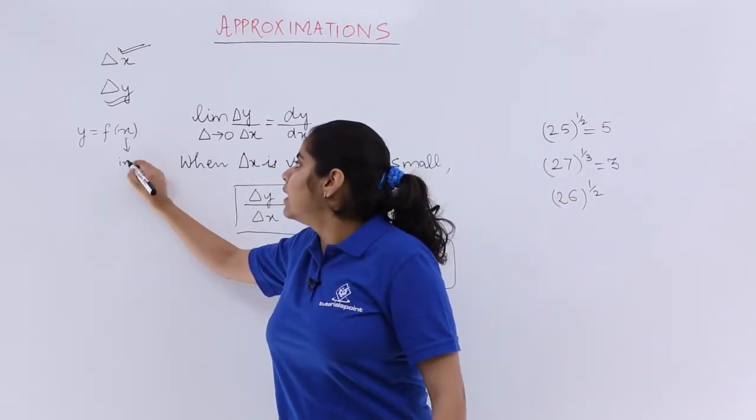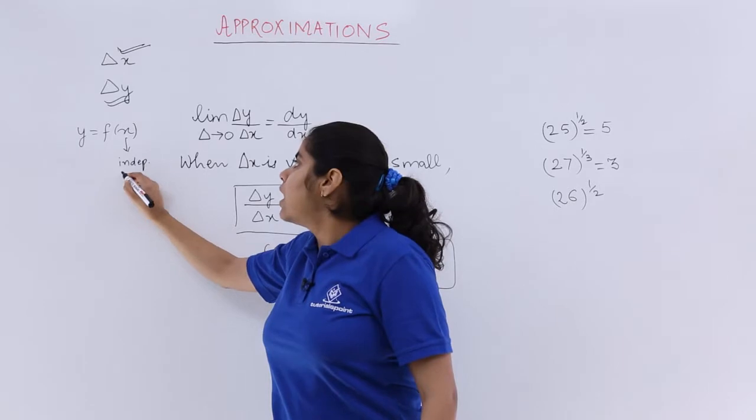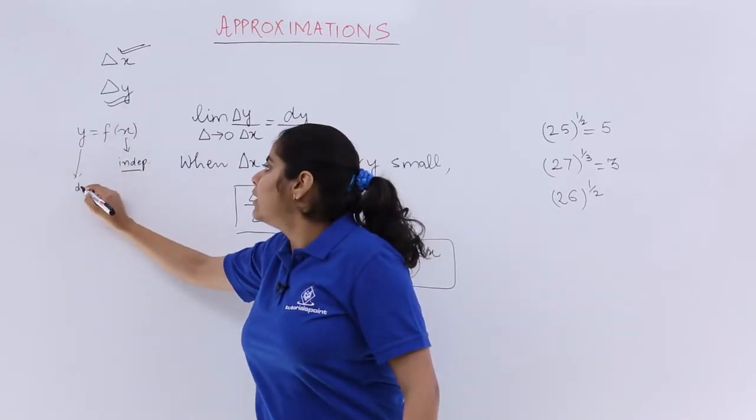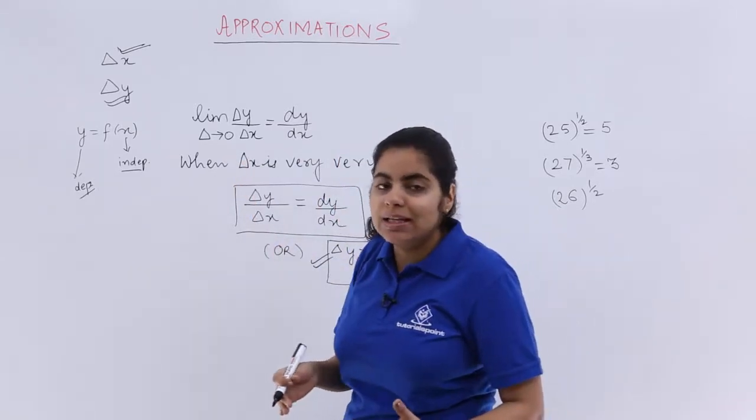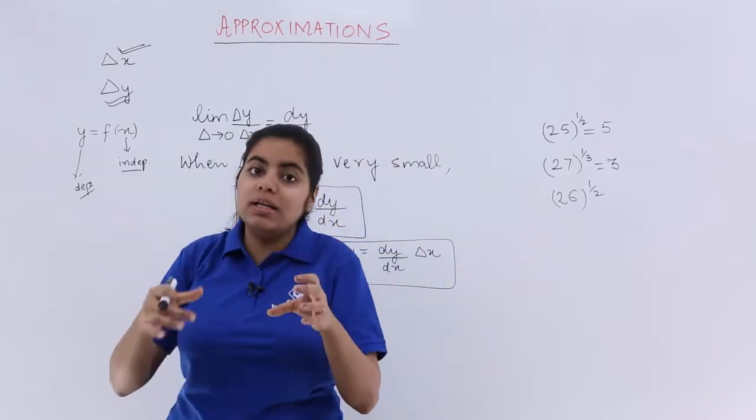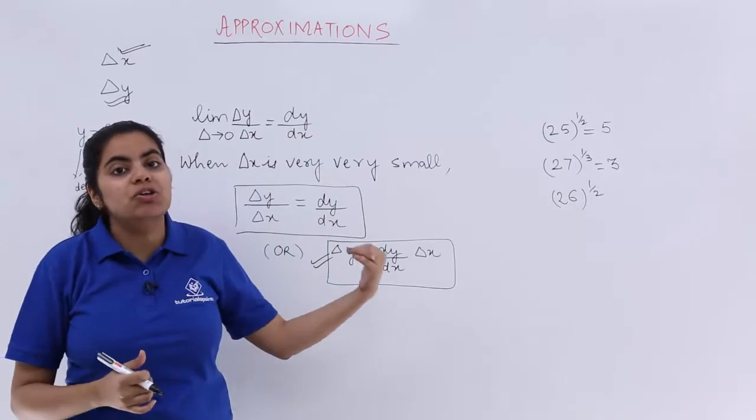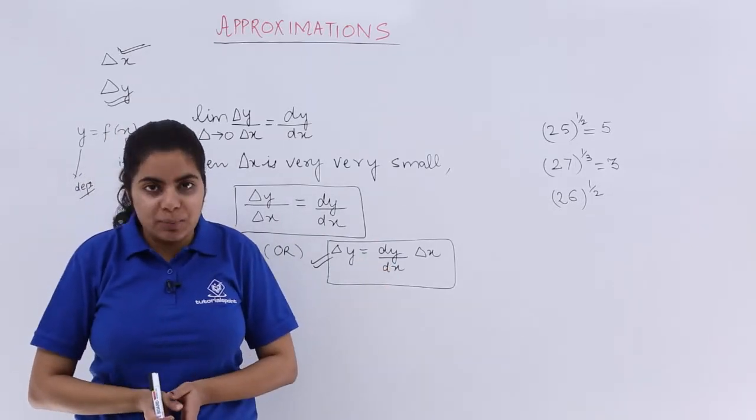You already know what is independent and dependent, right? x is the independent variable and y is depending upon its value, so it is the dependent variable. That is how you go about it. Basically, what is the difference between del y and dy? You must know this in order to work with approximations.